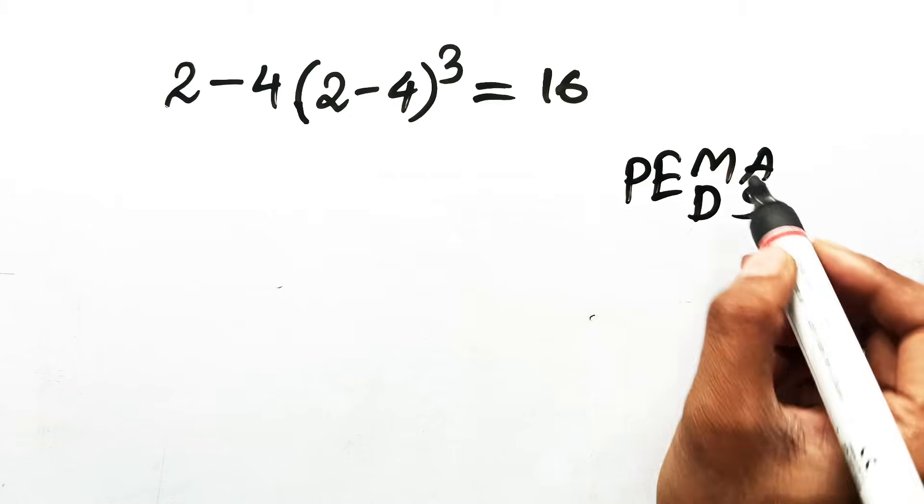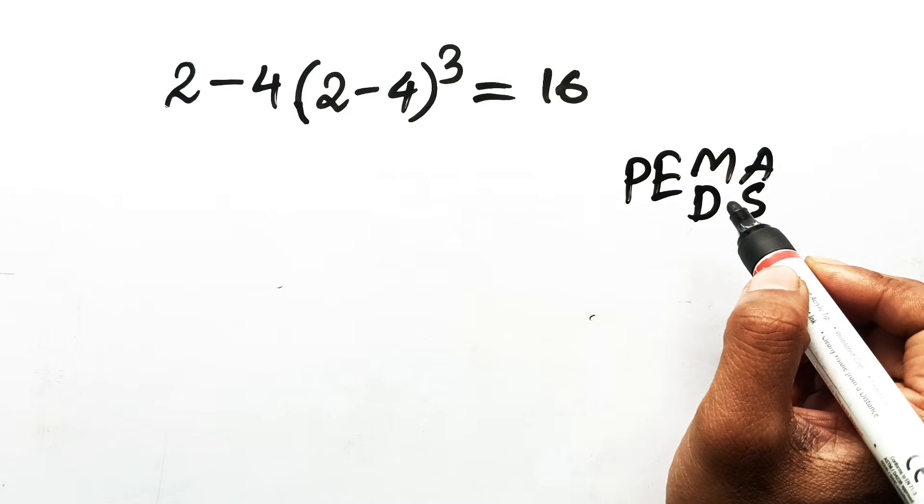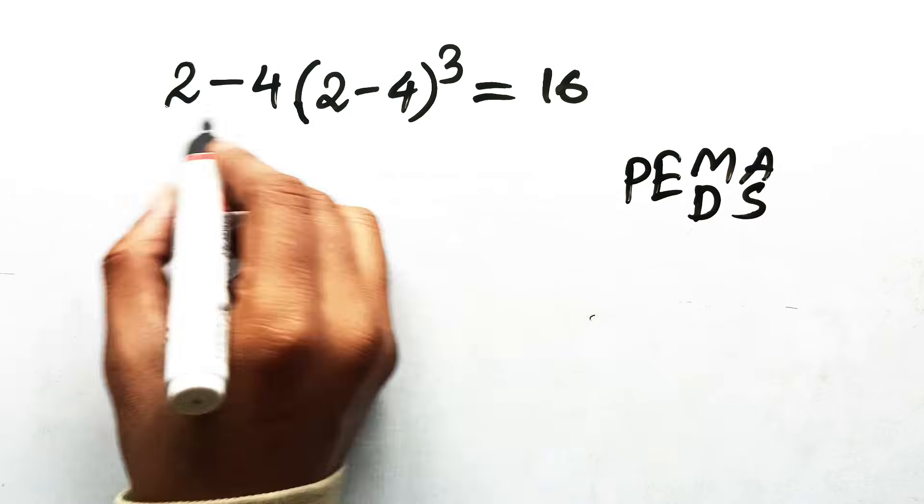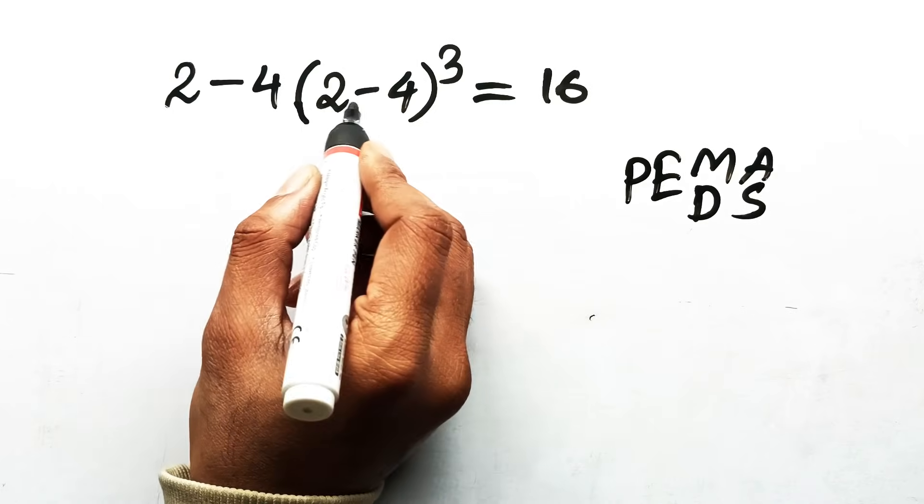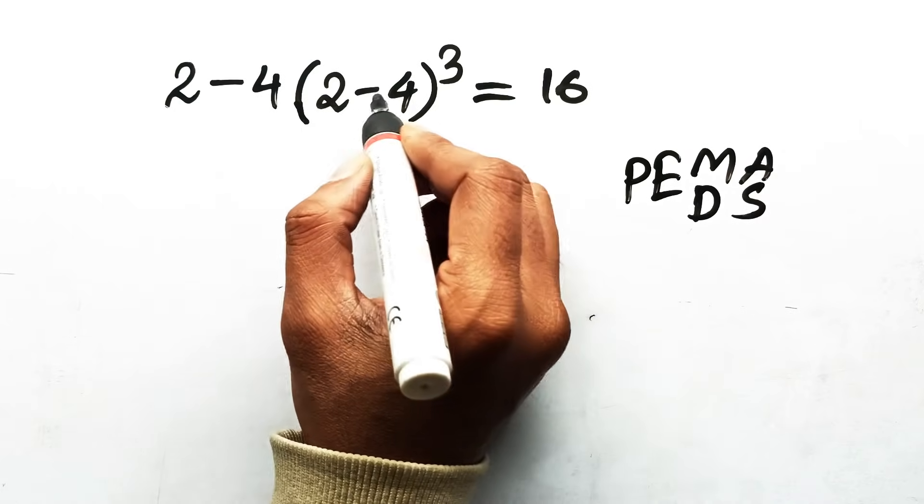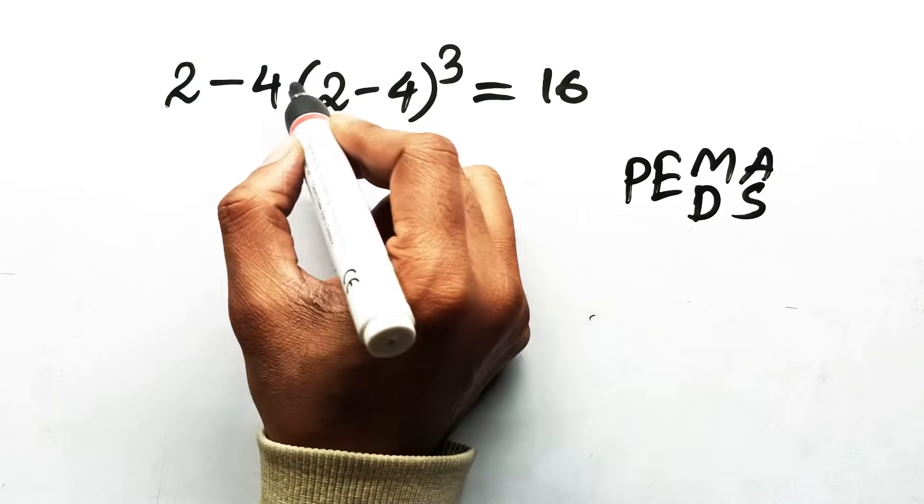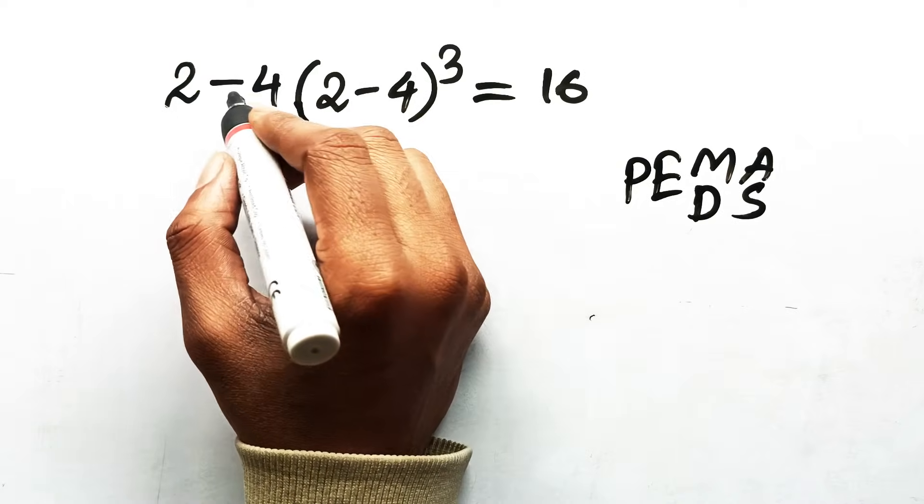And the key idea is that you must follow the structure exactly as written. So look again, 2 minus 4 times parentheses. That 4 is glued to the parentheses by multiplication, so subtraction does not get to go first.